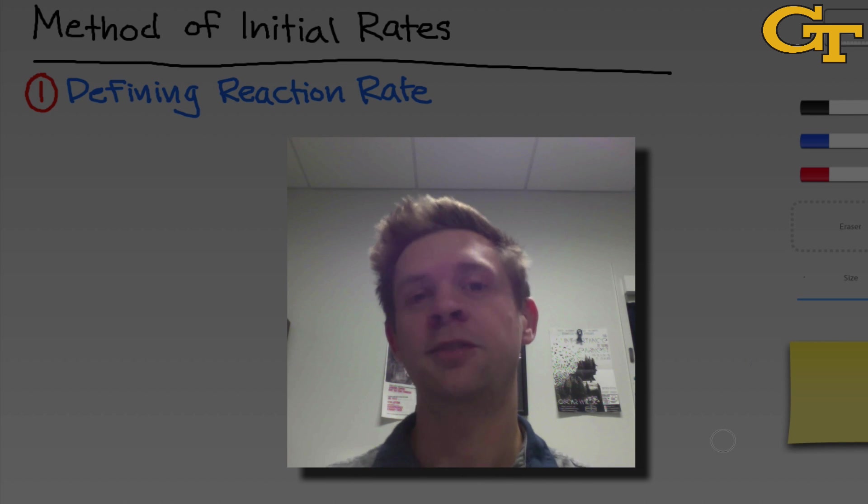The title of our upcoming experiment is the method of initial rates, and our goal in this experiment is to determine reaction orders for a reactant and a catalyst in a reaction, specifically the decomposition of hydrogen peroxide catalyzed by iron 3+ or Fe3+. The method of initial rates involves running a reaction at different initial concentrations and looking at the effect on the initial rate as we vary the concentration systematically. In this experiment, we're going to do that with a few twists.